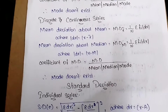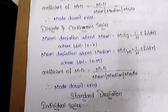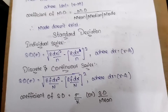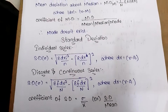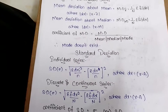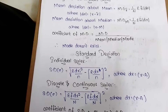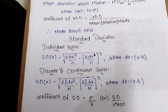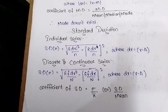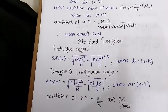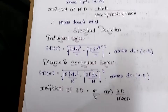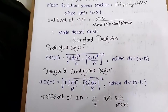Standard deviation (individual series) = √(Σdx² / n − (Σdx / n)²), where dx = x − A. For discrete and continuous series: SD = √(Σfdx² / n − (Σfdx / n)²), where dx = x − A. Coefficient of standard deviation = standard deviation / mean.